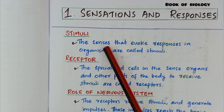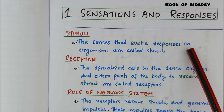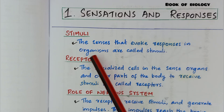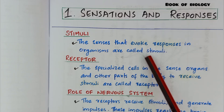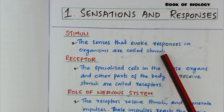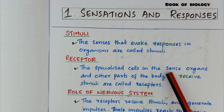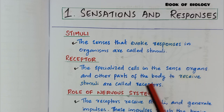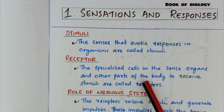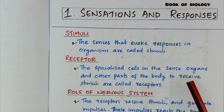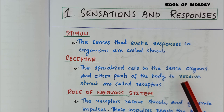First heading: stimuli. The senses that evoke responses in organisms are called stimuli. The specialized cells in the sense organs and other parts of the body that receive stimuli are called receptors.